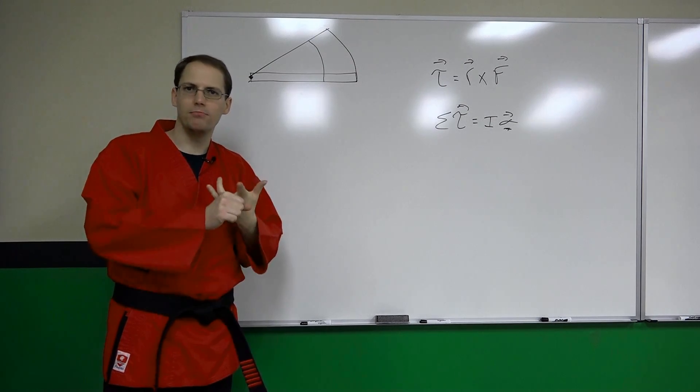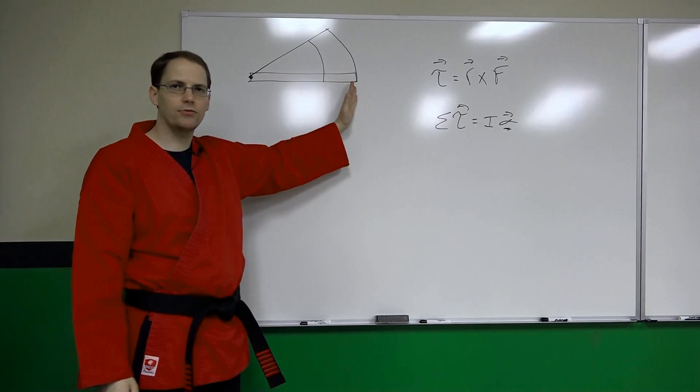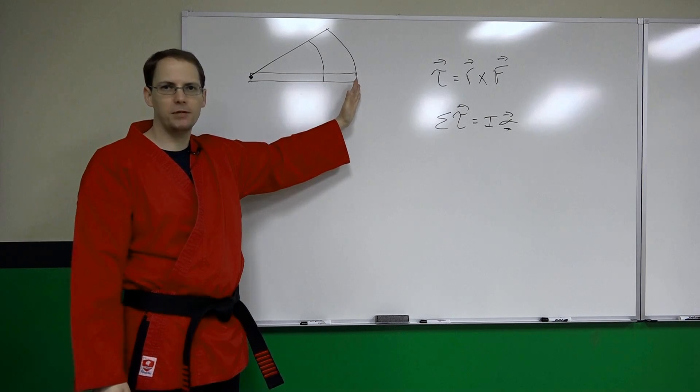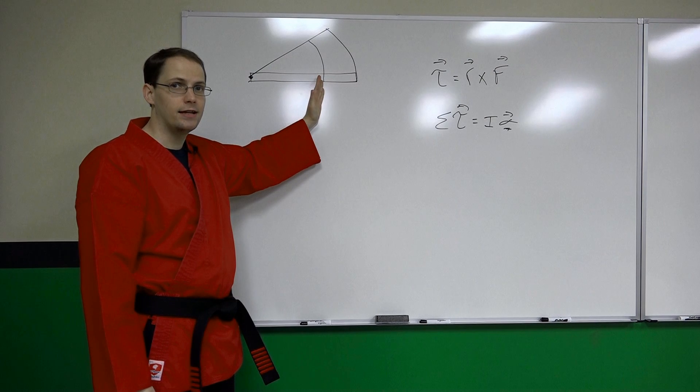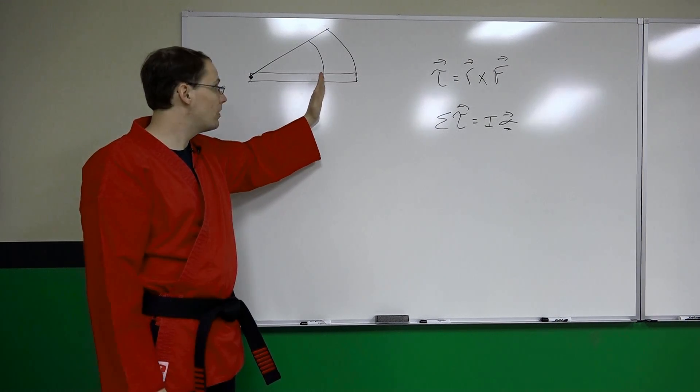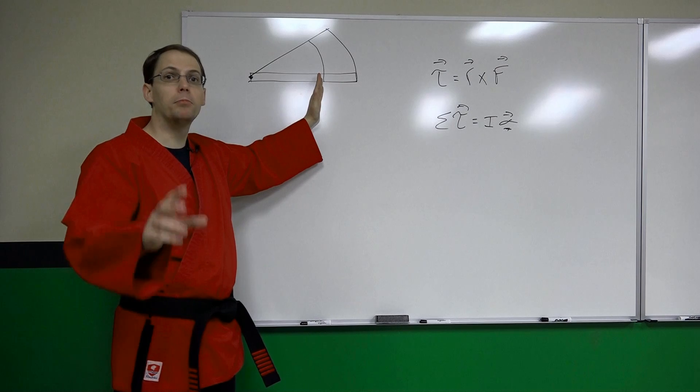If we're striking with the edge of our hand, yes we want that weapon to be going as fast as possible. If we strike a little farther in, the impact force might actually increase. We still want this to be going as fast as possible. But more than that, with regards to the mass that's at play, we're not just striking with our hand.